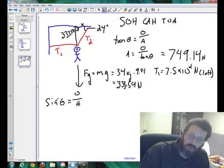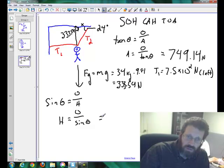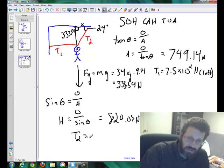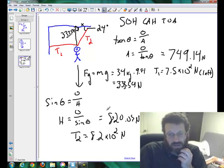Now I'm trying to find hypotenuse, so again I'm going to multiply both sides by H and then divide by the angle. So what I'm going to work out here is that the hypotenuse, which is T2, will be the opposite divided by the sine of our angle, which will be 333.54 divided by the sine of 24, and that works out to 820.03 newtons. So when we're reporting it, the magnitude of T2 to the correct sig digs, which is 2, will be 8.2 times 10 to the second power in newtons.